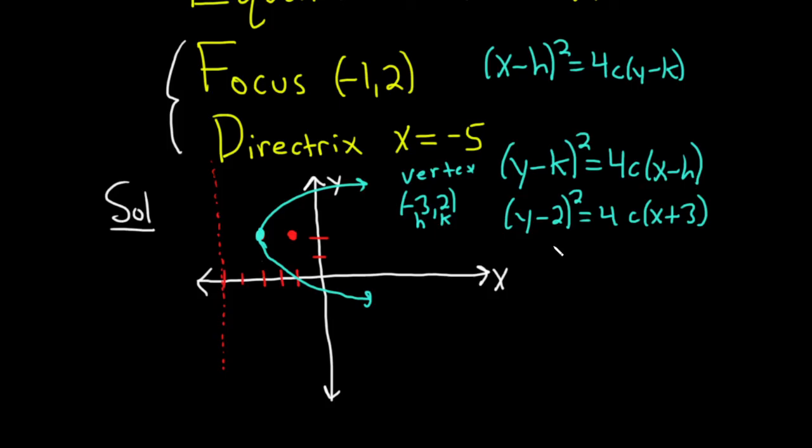Alrighty, so now we just have to find c. The absolute value of c is this distance here, which we see is 2. Now, because it opens right, c is positive. So c is equal to 2. If it had opened left, c would be negative 2.